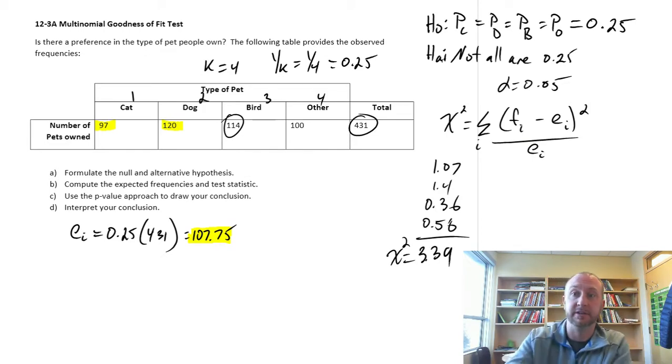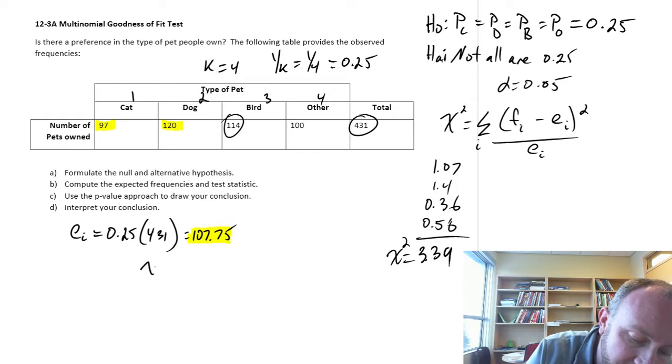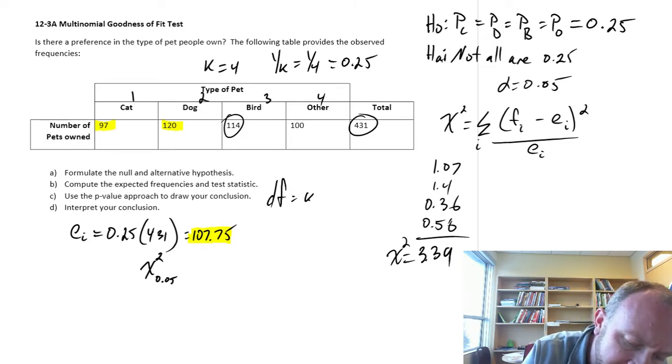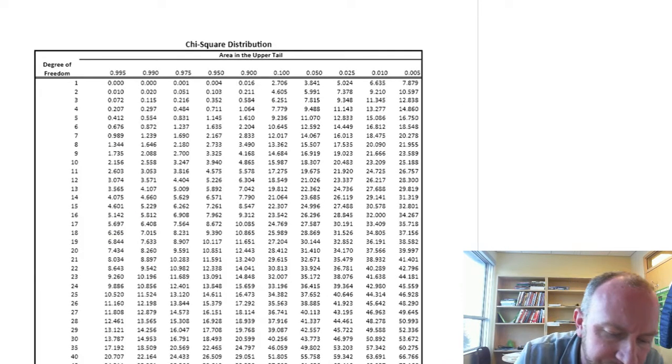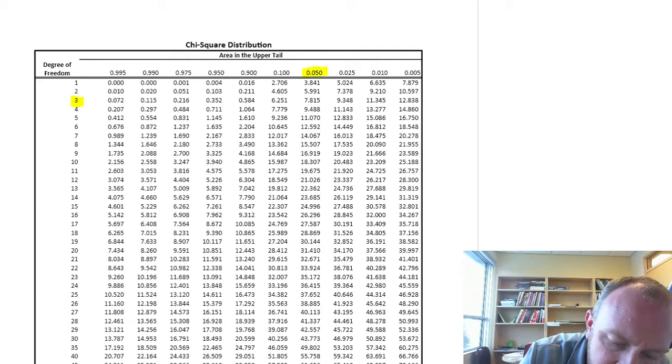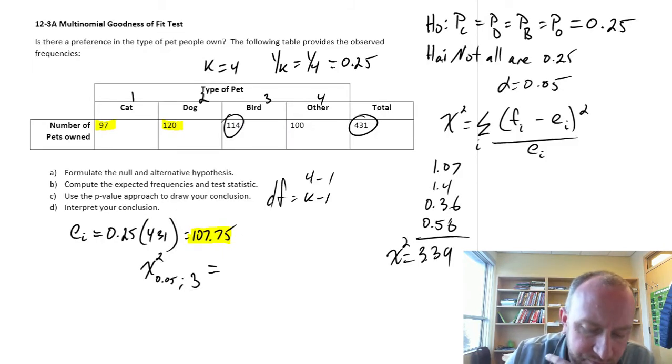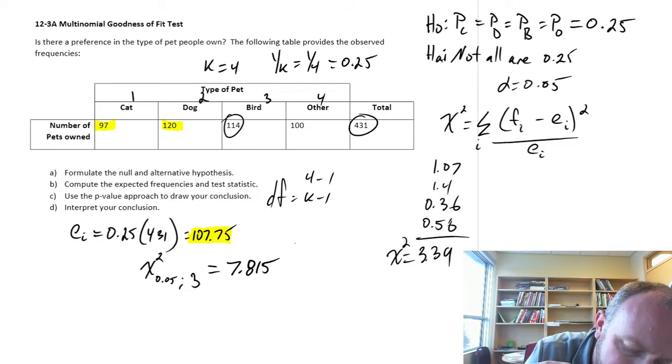There, a little bit faster than some of those other ones that we have. So we'll look for a critical value. Alpha is 0.05. Degrees of freedom is just k minus 1, so this is going to be 4 minus 1, so I'll have 3 degrees of freedom. We go to our chi-squared tables, 3 degrees of freedom, alpha is 0.05, so I have a critical value of 7.815. And we reject if our test statistic is greater than or equal to that critical value.